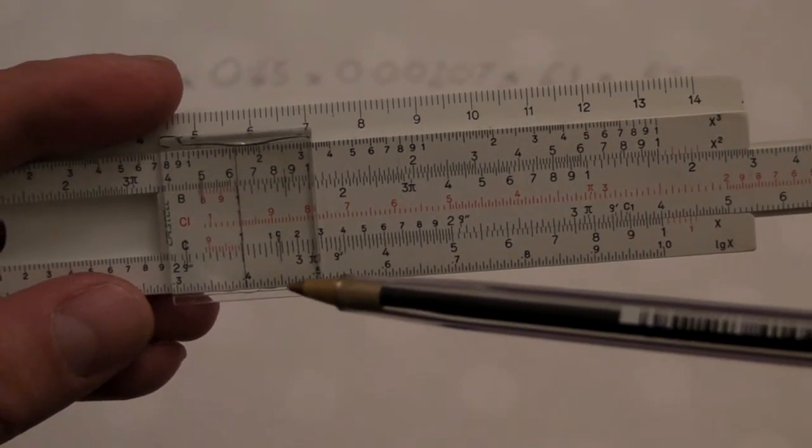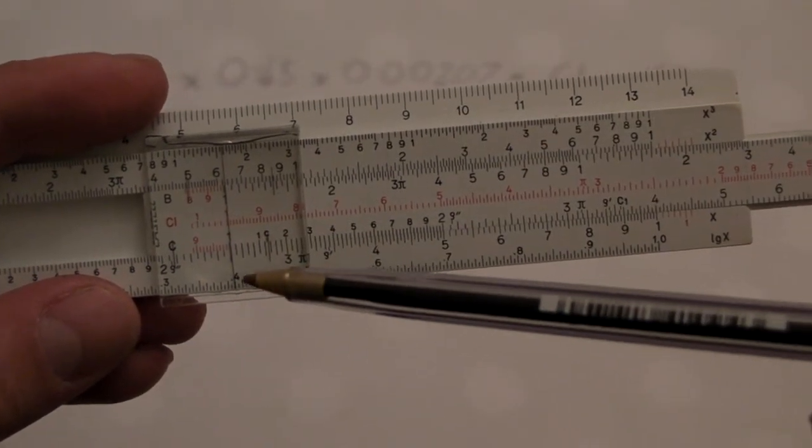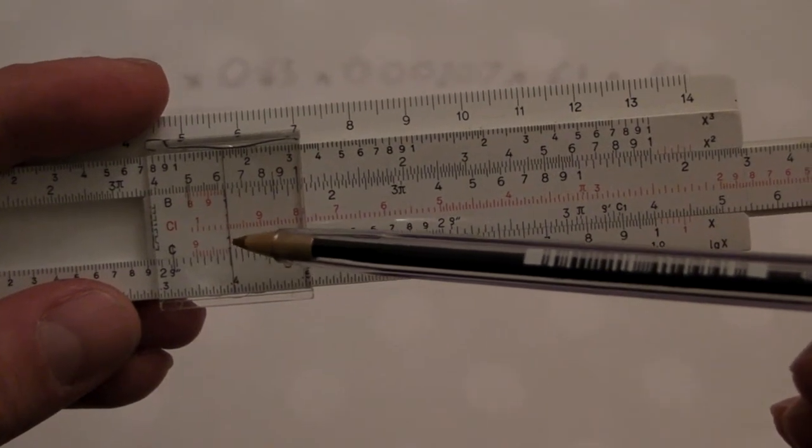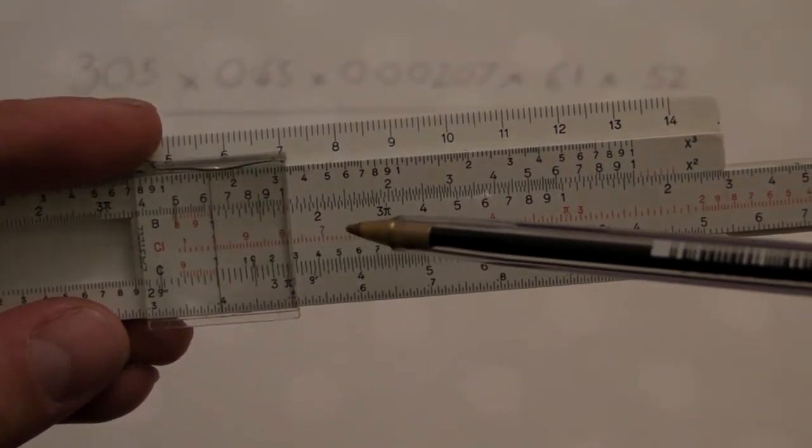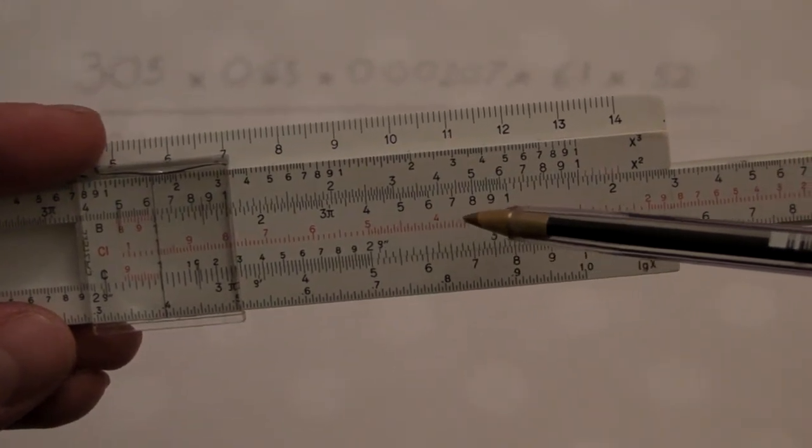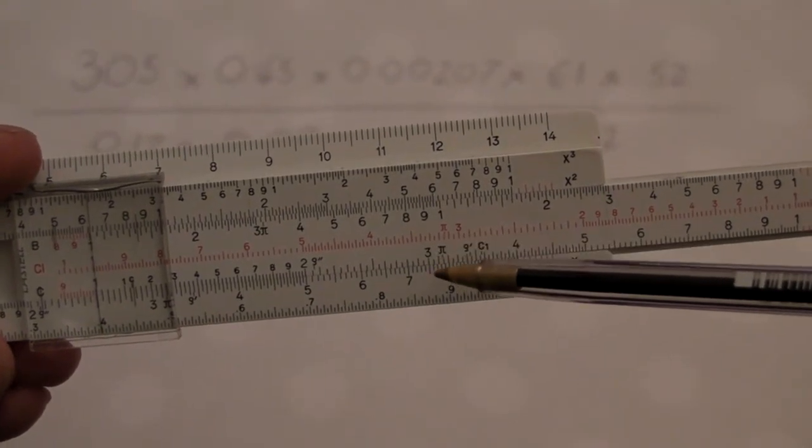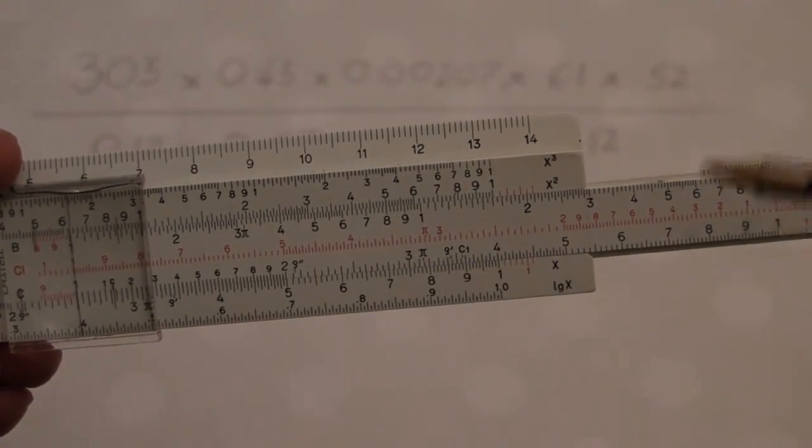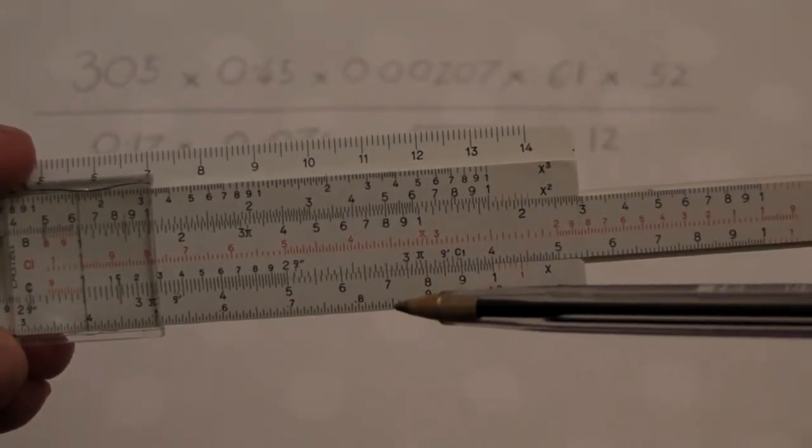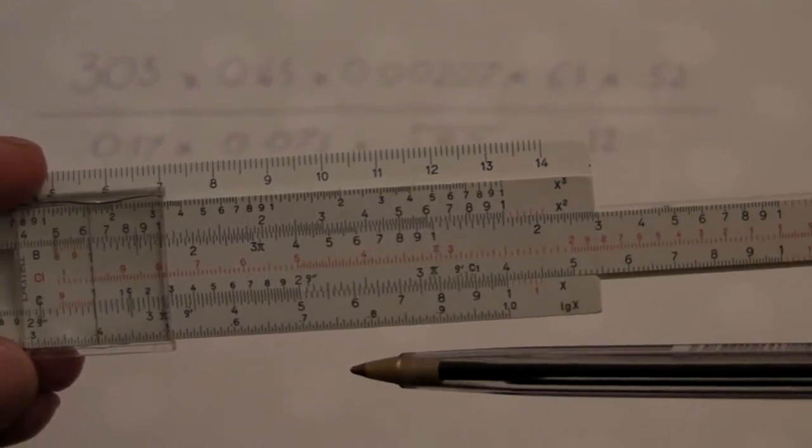Now the advantage of this method is that it then allows you to carry on and do a multiplication with that answer you've found. So at the moment I've got the 1 set against the 2.5, so anything I line this cursor with along the top allows me to multiply by 2.5. So without moving the slide, I can do x divided by y times by z.